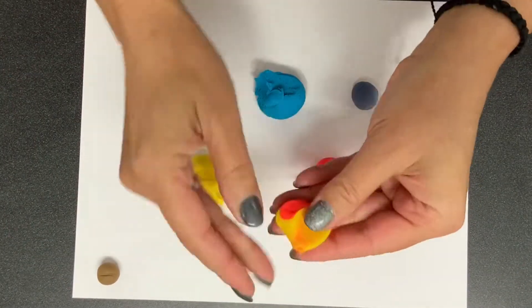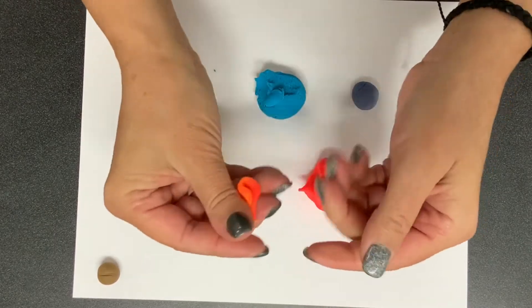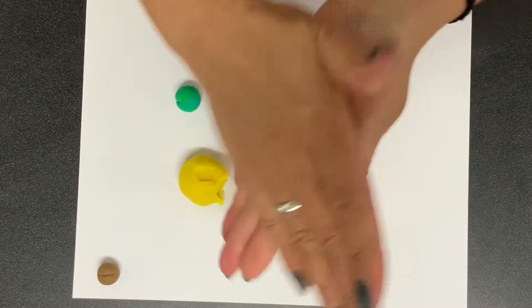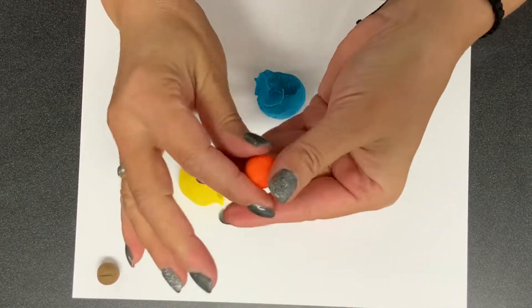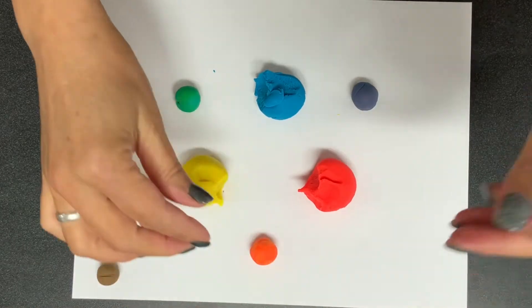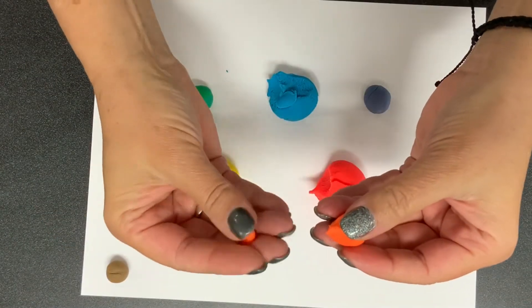And then you're gonna take a yellow and a red and you're gonna work those in together and mix them really well. You're gonna create orange. So red and yellow make orange. You've created the secondary colors.